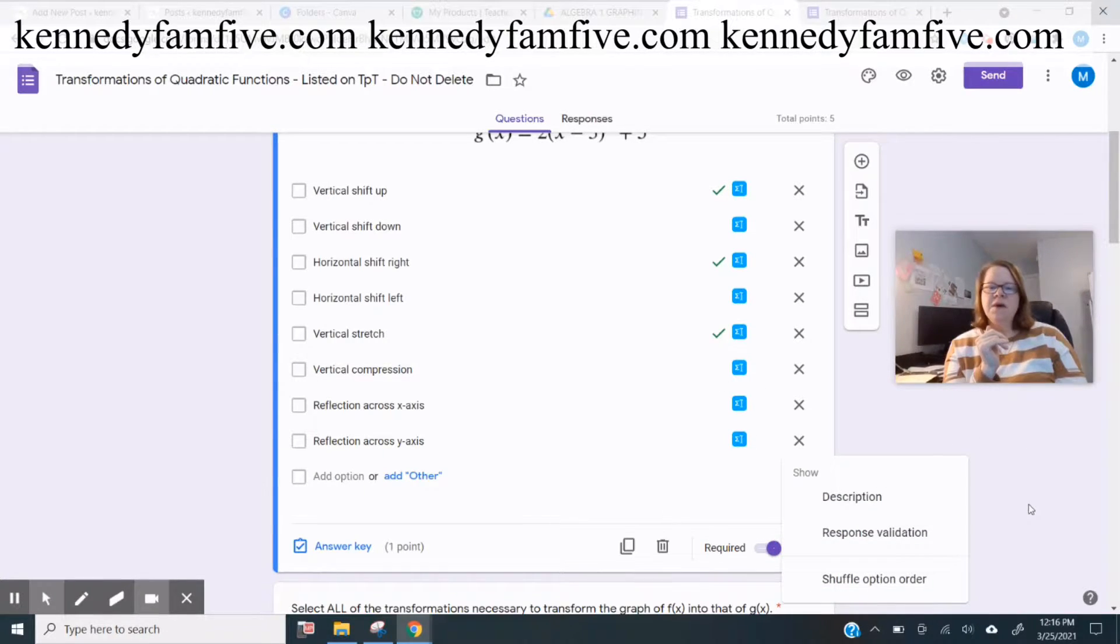Usually I have answer choices shuffled, but there's a lot of answer choices here. I'm not trying to be super confusing. I want to really assess do you understand, not can you pick the right one out from this ever changing list of answers. So I did not choose shuffle option order. If you look at my settings video, I'll put it somewhere up here. Usually I do. That's a very typical thing for me to do on these assessments, but for this one I chose not to.